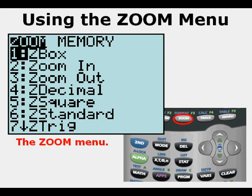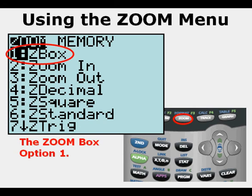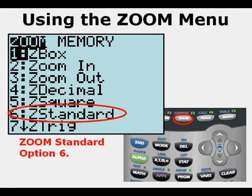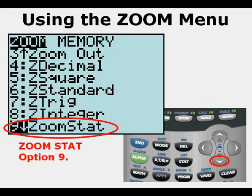When we press the Zoom menu key, this is what we see — the Zoom menu. We'll look at Option 1, Z-Box for Zoom Box. We'll look at Option 5, Zoom Square. We'll look at Option 6, Zoom Standard. And if we scroll down, we can see Option 9, Zoom Stat. These are the four options we'll be introduced to in this video lesson today.